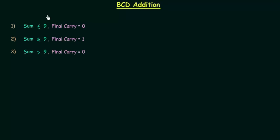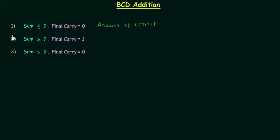While adding two BCD numbers we have to deal with three cases. In the first case, when sum is less than or equal to 9 and final carry is equal to 0, the answer obtained is correct. In BCD addition we only have to perform simple binary addition.